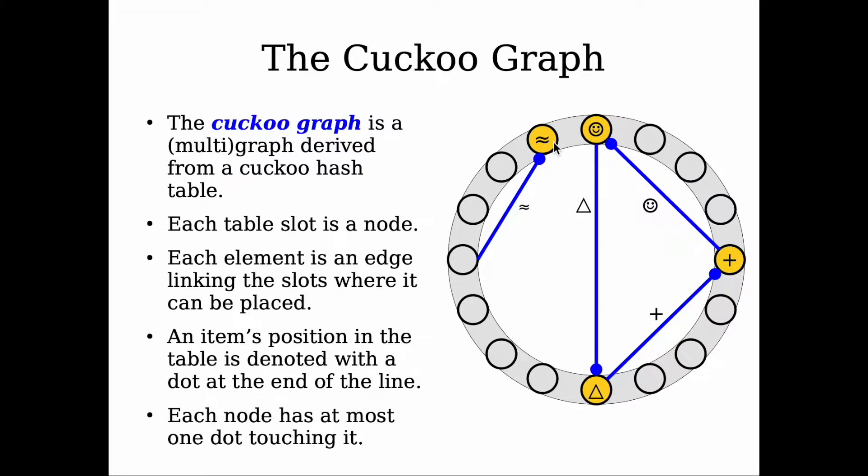Since we have two options but we just need one location for an item, we only have one node touching it. So the degree of the nodes is not necessarily the same—it depends on the distribution of the items. Note that this is a multigraph.